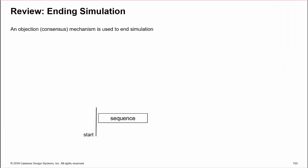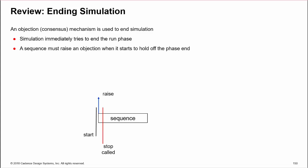Let's quickly review ending a UVM simulation. Remember the objection mechanism controls when a simulation ends. UVM immediately tries to end the run phase, and you must prevent the end by raising an objection at the start of a sequence. When the sequence is finished, it must drop the objection to allow the run phase to end.